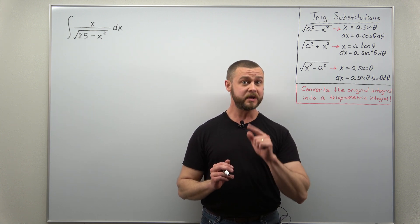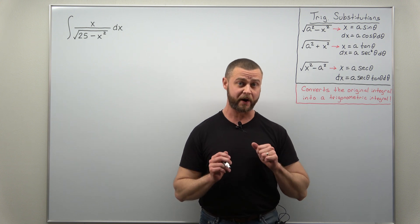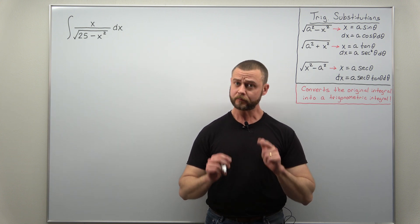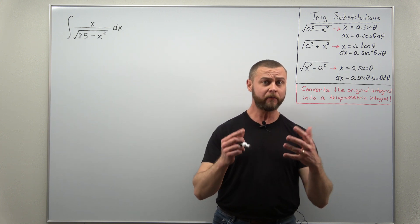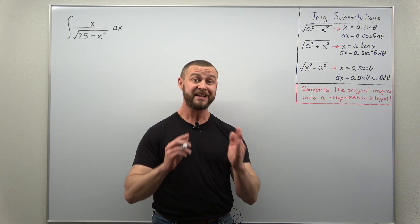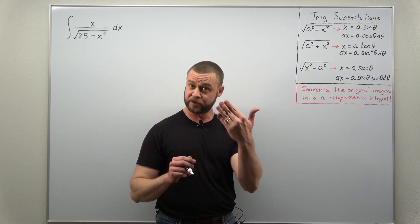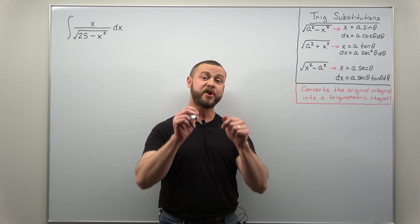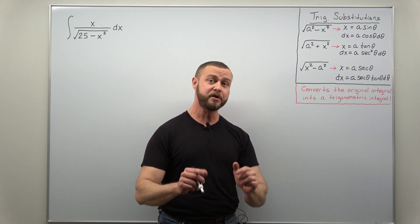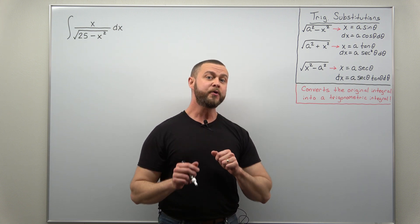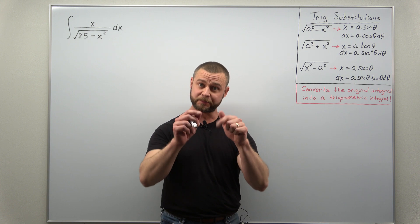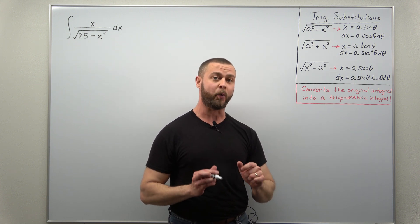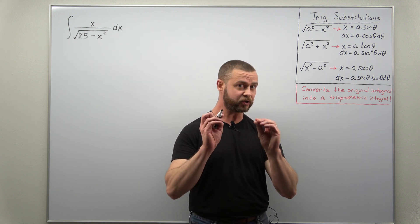Go with u equals 25 minus x squared — we're going to get to that at the end. Now if you're not comfortable or aware of all the steps that go into a typical trigonometric substitution problem, check out the video linked in the description where we go through everything in detail.